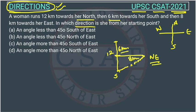But in the answer options, they have asked the angle also. We know the answer will be from northeast — north of east. So we can cut option A and option C. The answer will be either B or D. Now they are asking the angle — whether this angle is greater than 45 or less than 45.